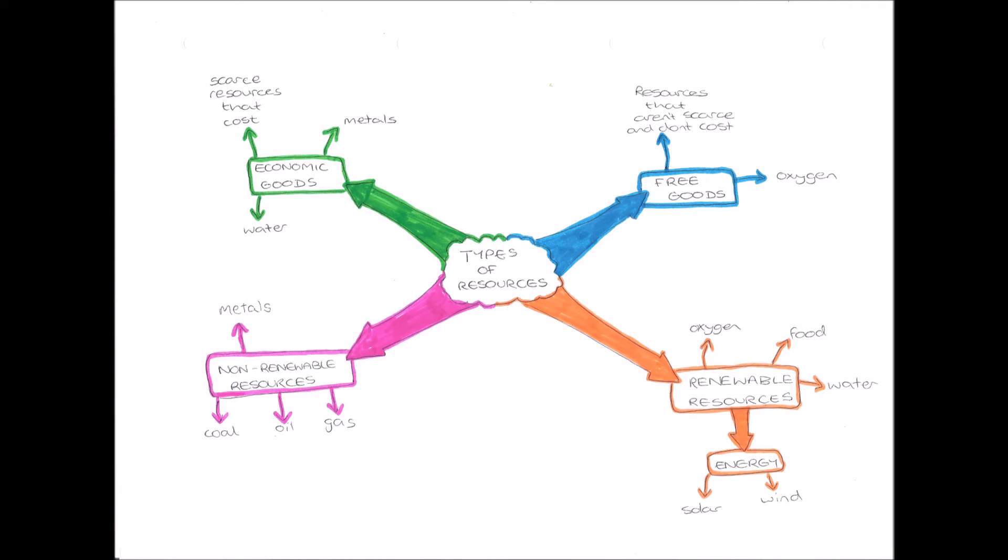An economic good is a scarce resource, it's difficult to get hold of, so it costs us. Whereas a free good is a resource that is not scarce, it is easy to get hold of, so therefore it does not cost us.